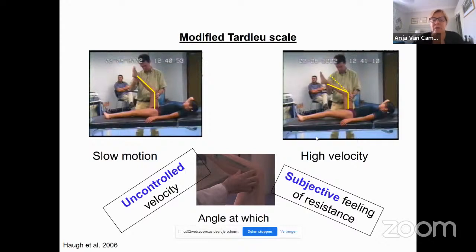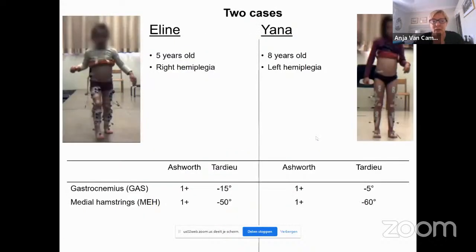To document the limitations, we have two cases — hemiplegic girls — and they both have a one-plus score for gastrocnemius and medial hamstrings. You can define their Tardieu scales when you assess them. But they present differently, and when you treat them, they also have different outcome results.